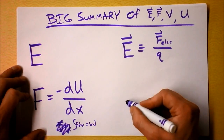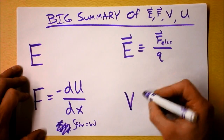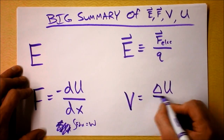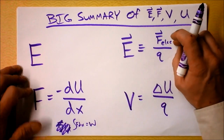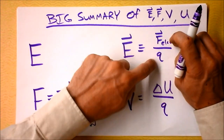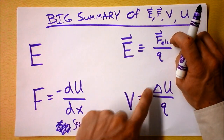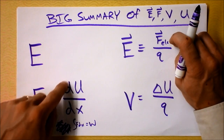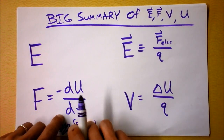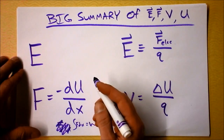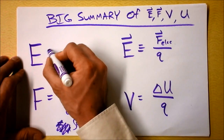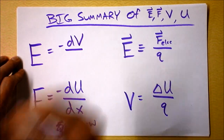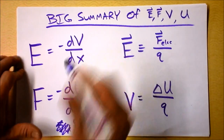Now I want to introduce the idea of electric potential. It is a capital V, and it is the change in electric potential energy divided by charge — in just the same way as electric field is force divided by charge. We can also argue that electric field is the spatial derivative of electric potential.